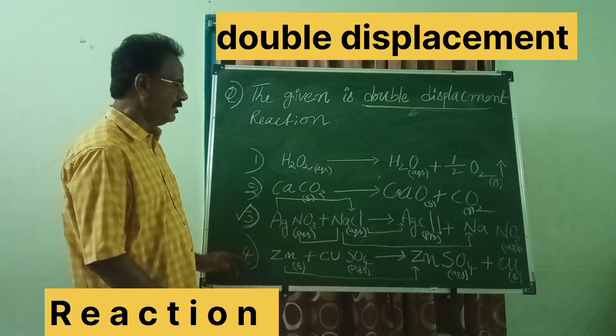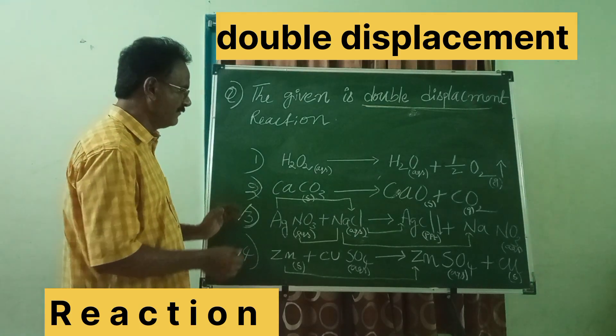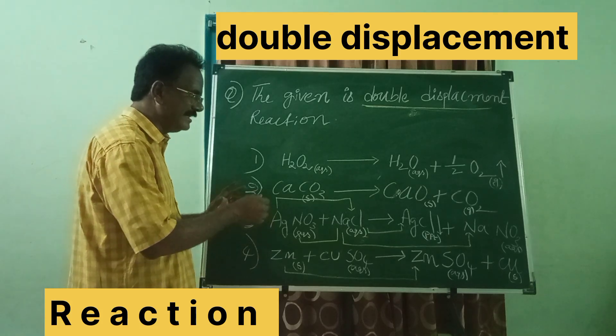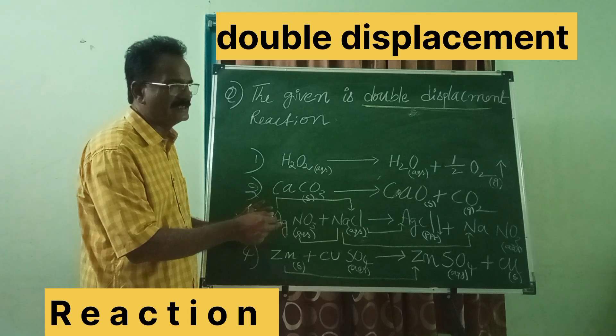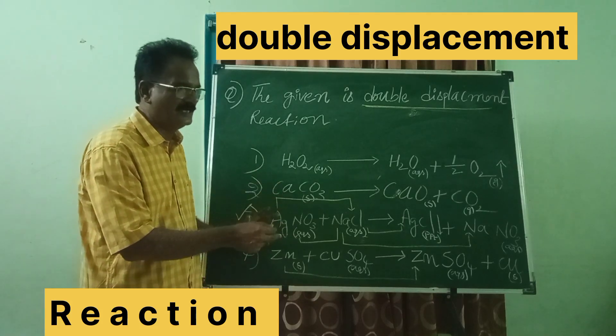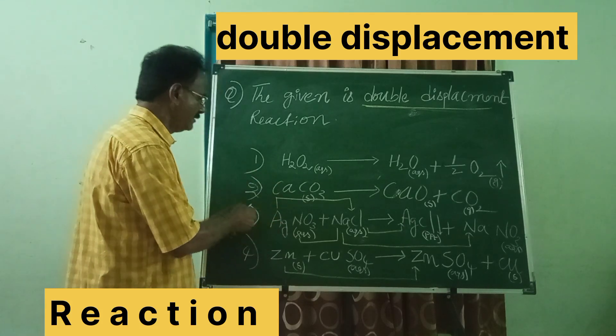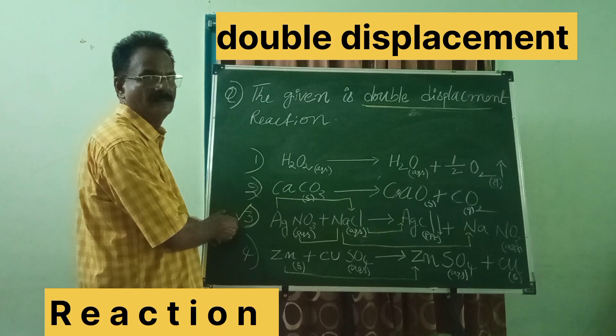So, answer for this question is, where both the elements are exchanging the ions, is called as double displacement reaction, and the third option is right answer. Thank you.